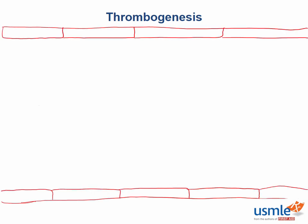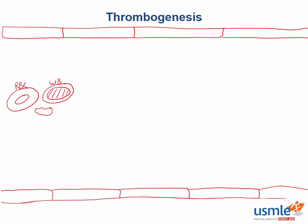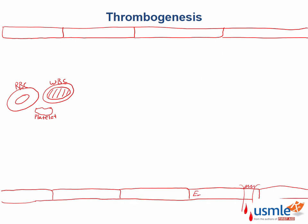So we have our normal blood vessel here with our red blood cells, white blood cells, and platelets flowing through them, minding their own business. Then out of nowhere, an evil piece of paper cuts you. This starts off our whole process resulting in injury to the endothelium, and this causes a transient vasoconstriction of the blood vessel.